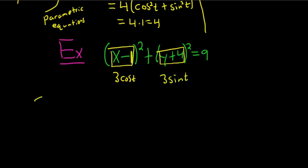So we have two equations now 3 cosine t equals x minus 1 and you can convince yourself right if you square this and you square this you do get 9. So 3 cosine t is x minus 1 and 3 sine t is y plus 4.